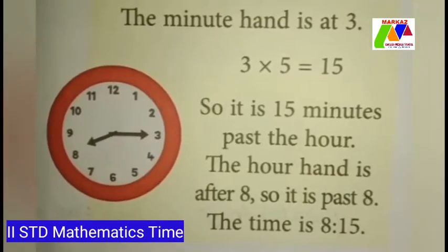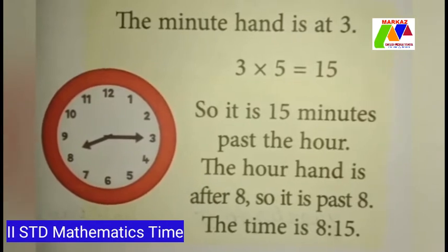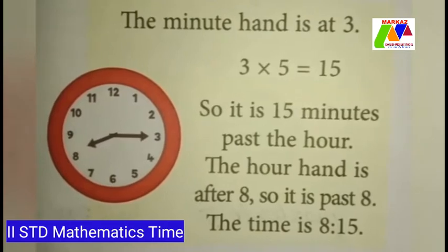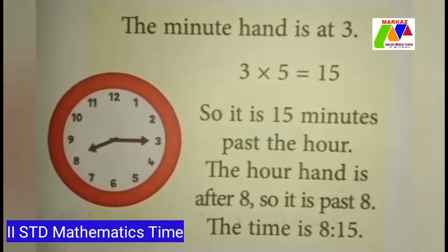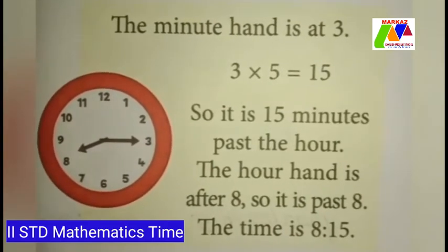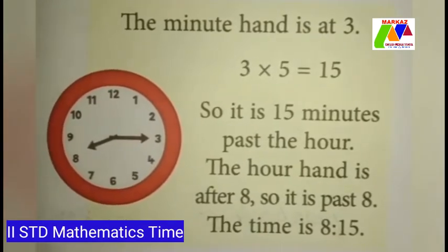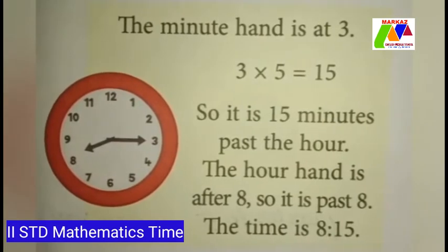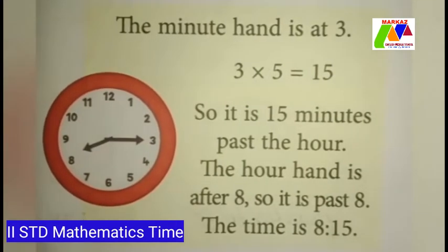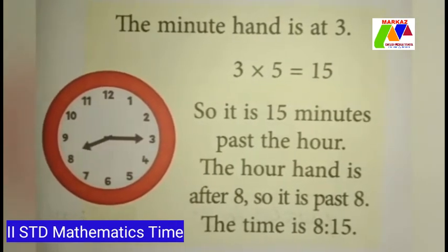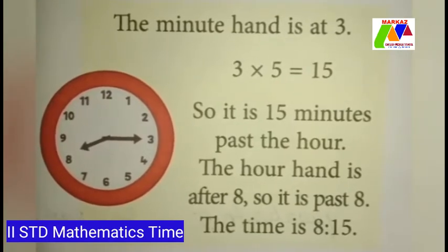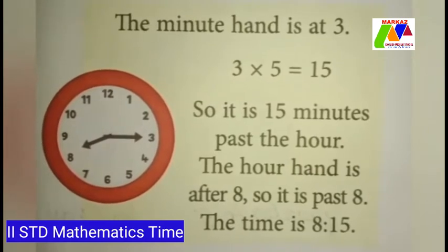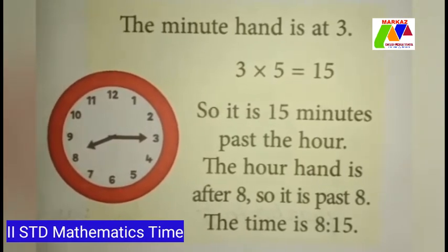Children, look at this clock. The minute hand is at 3. We can multiply the number shown by the long hand by 5 to get the minutes. So here we multiply 3 by 5, which is 15 minutes. It is 15 minutes past the hour. The hour hand is after 8, so it is past 8. The time is 8:15.